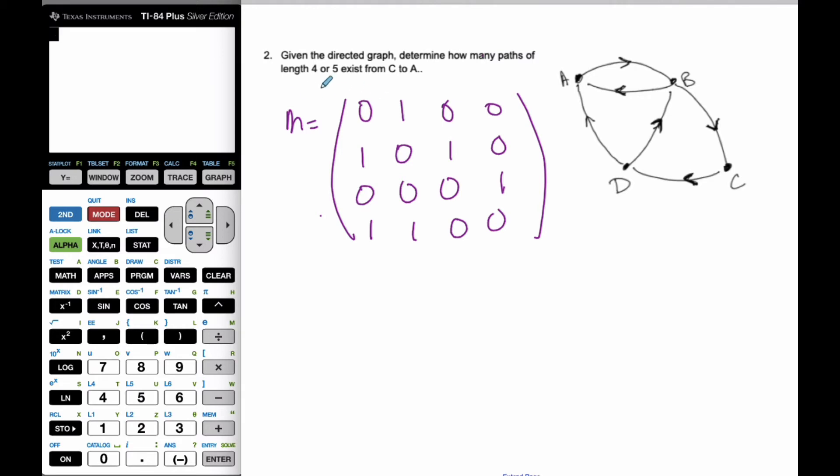If I want to find the path of length 4 or 5, then I want to find M to the power 4 plus M to the power 5. This will give me how many paths from any two vertices of length 4, and this is of length 5.